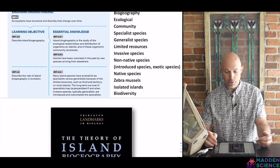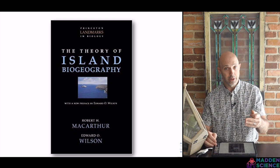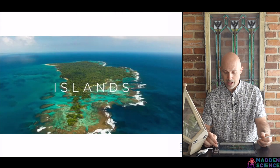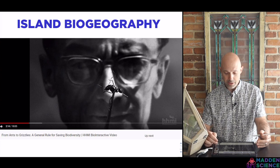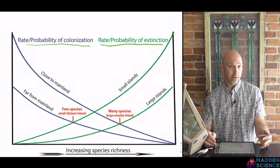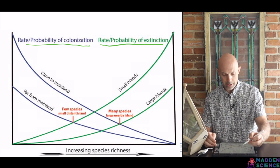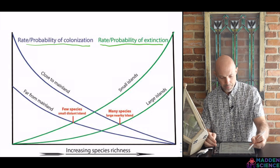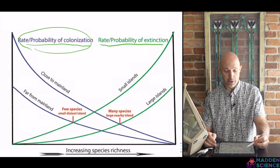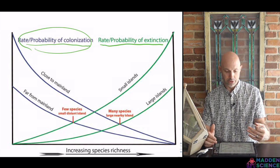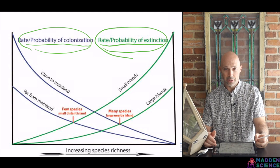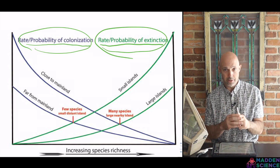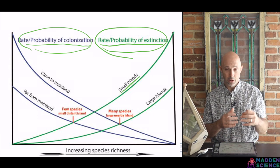Quickly, onto island biogeography. The source is the Theory of Island Biogeography by E.O. Wilson and MacArthur. Really interesting: Planet Earth 2 on islands. The go-to source is HHMI Biointeractive on island biogeography — it's called From Ants to Grizzlies, starring E.O. Wilson; beautifully done. This highlights key findings: if you look at the rate or probability of colonization, the closer you are to the mainland, the higher the rate of colonization; the farther away, the lower. For rate or probability of extinction, this is related to size of the island — the smaller the island, the higher the rate of extinction; the larger the island, the lower the rate.